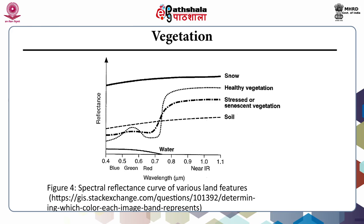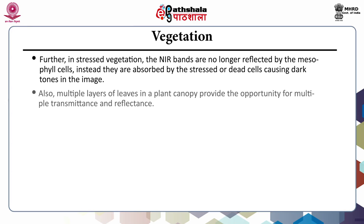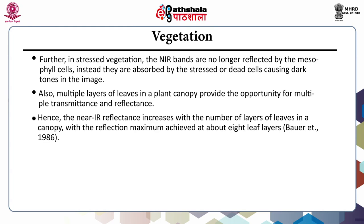This figure shows the spectral reflectance curve of various land features. In stressed vegetation, the near-infrared bands are no longer reflected by the mesophyll cells; instead they are absorbed by the stressed or dead cells, causing dark tones in the image. Multiple layers of leaves in a plant canopy provide the opportunity for multiple transmittance and reflectance. Hence, the near-infrared reflectance increases with the number of layers of leaves in a canopy, with the reflection maximum achieved at about 8 leaf layers.